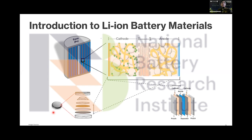As we know, all kinds of lithium-ion batteries — whether cylinder, coin cell, console, button cell, or pouch cell — have the same main components: the cathode, separator, and anode electrode.